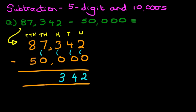The thousands, seven minus zero is seven. And the ten thousands, eight minus five. Eight minus five is three.